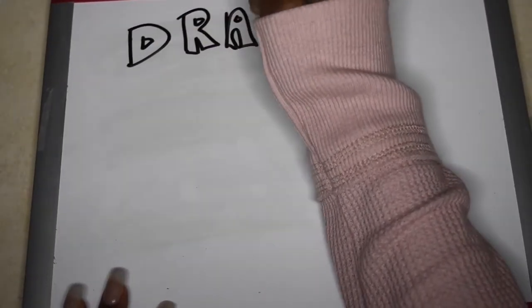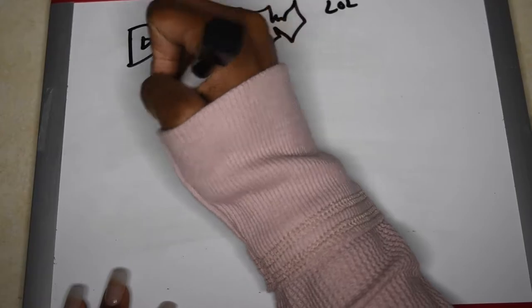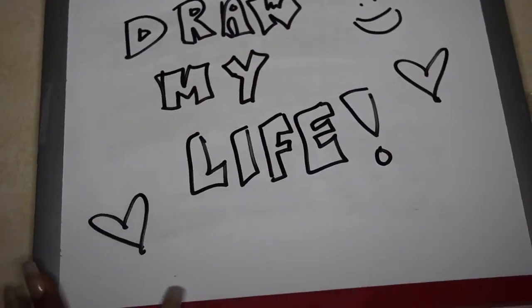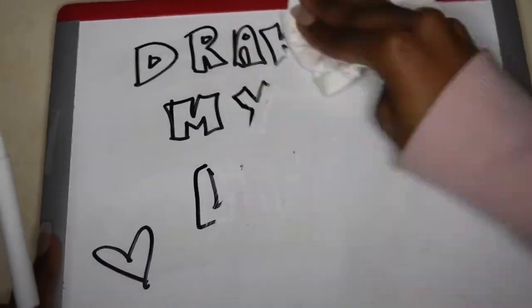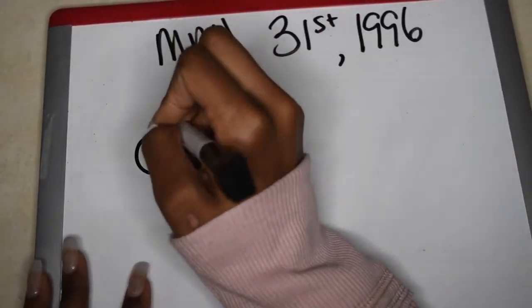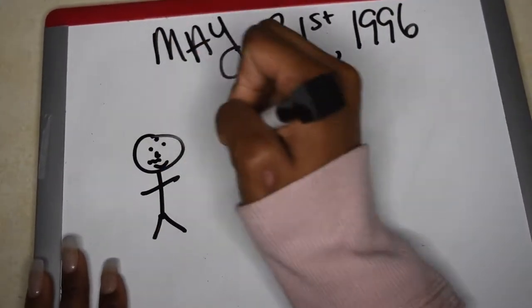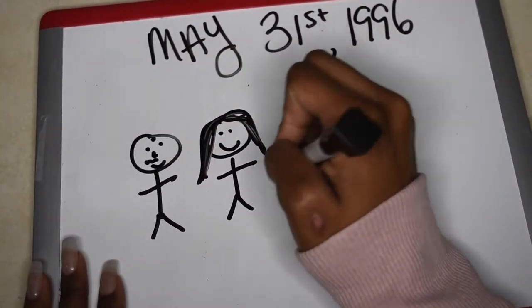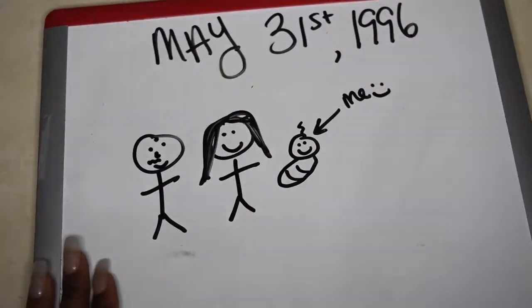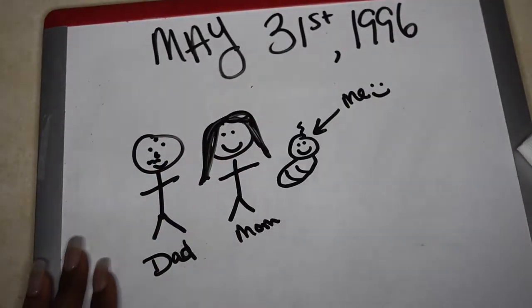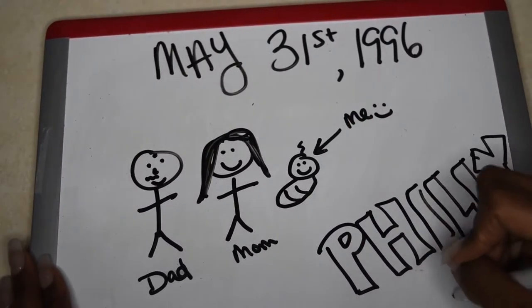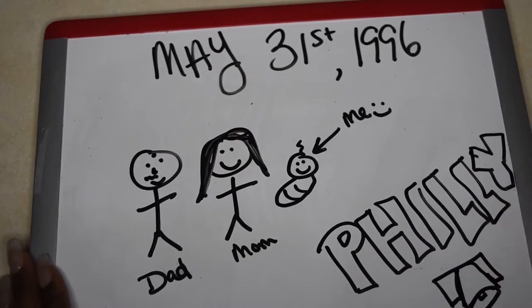Yo yo yo, what's up guys and welcome back to my channel, Sarah Marguerite. So this video is a Draw My Life, even though I cannot draw, so don't come for me, okay? On May 31st, 1996, I was born to my father named Emil and my mom Stacy. And I was born in the city of Philly. Hey, and look at that janky Liberty Bell.